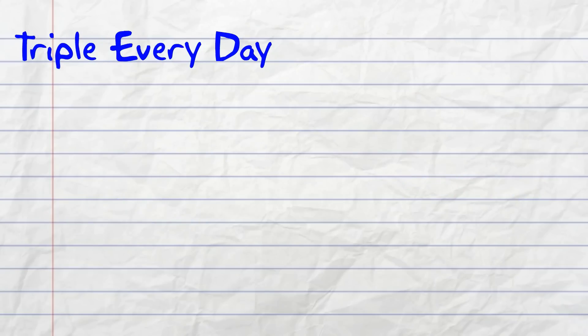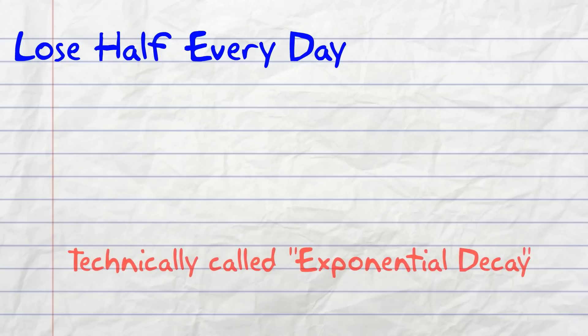Now, if you were to triple every day, then you would use y equals 3 raised to the x. If you were to lose half of something each day, you would use y equals 1 half raised to the x.